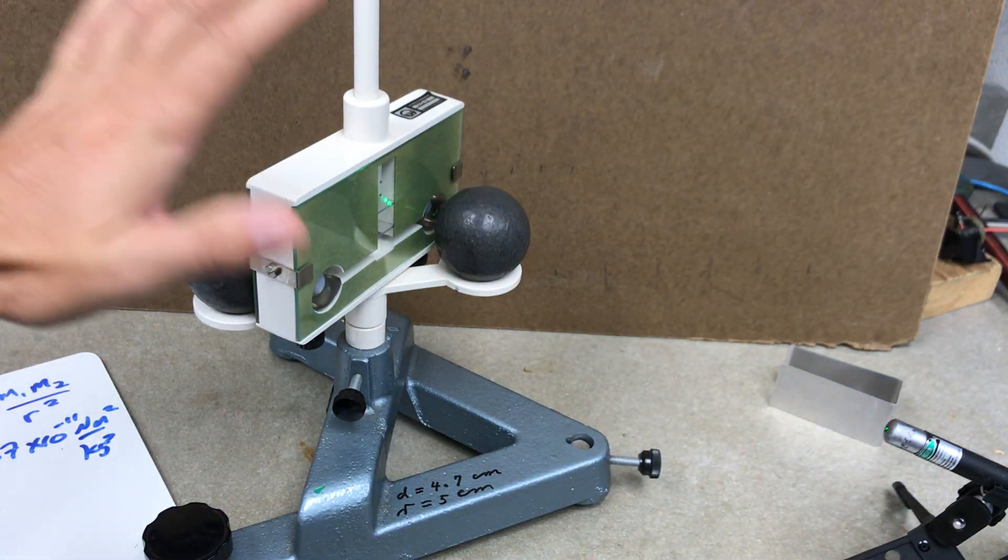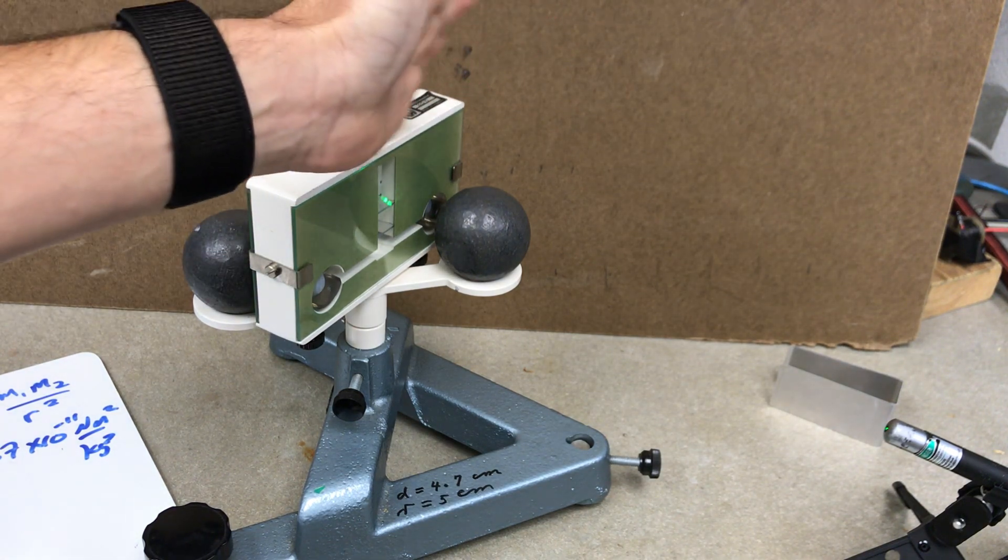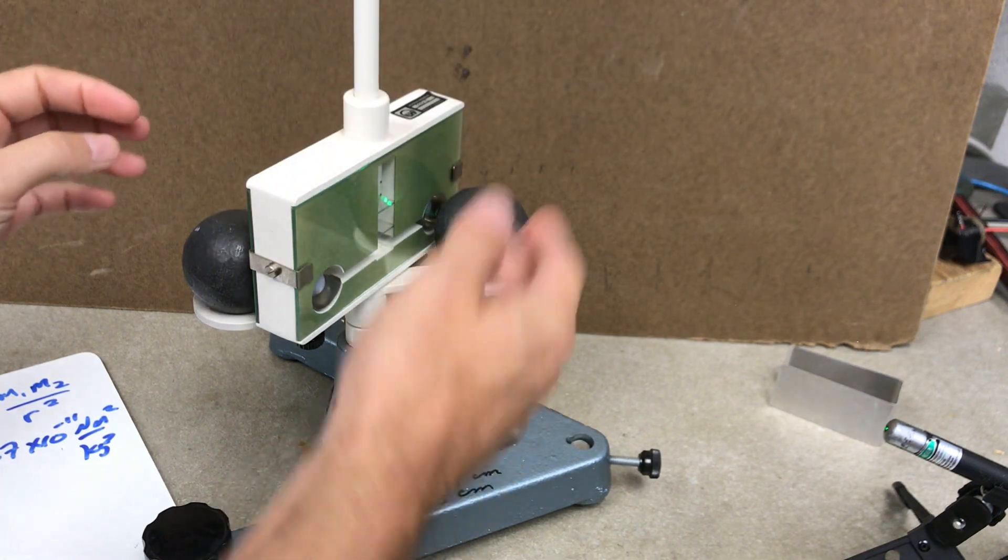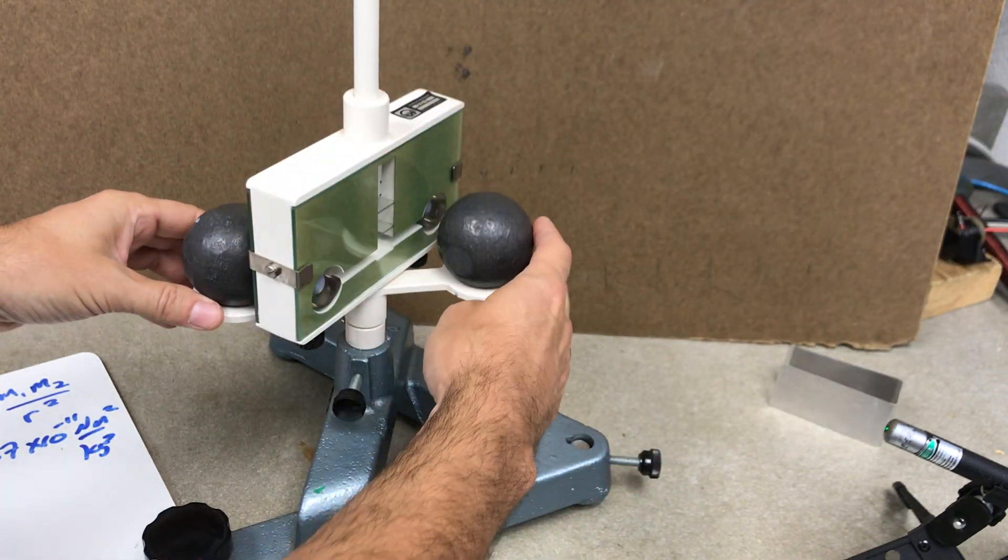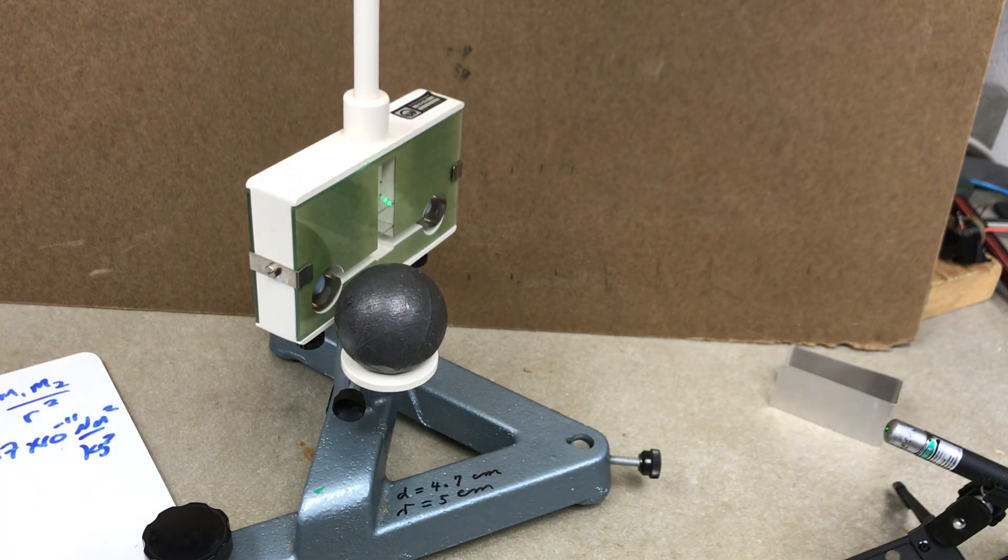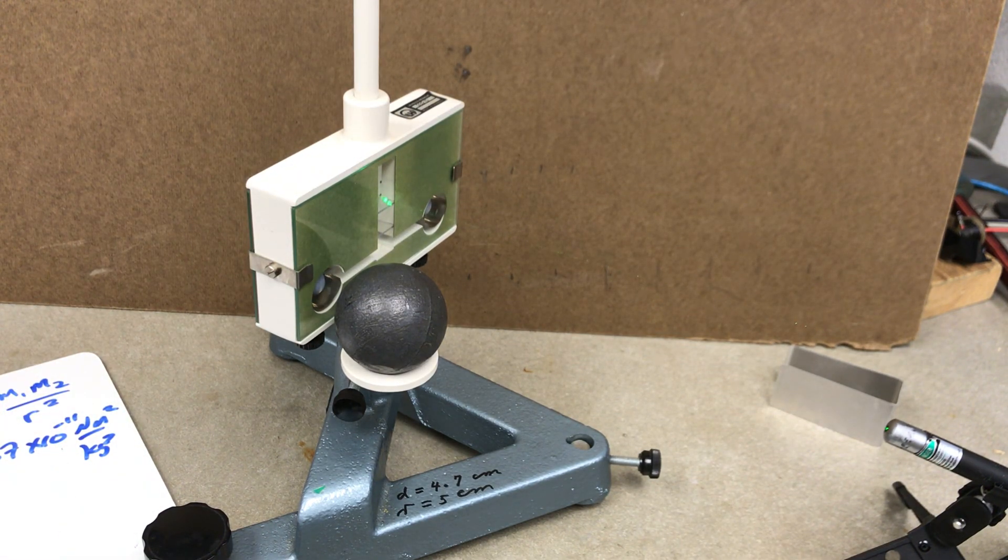Now it takes a while for the bar to settle in. It oscillates a little bit, and then it takes a while to settle in. And then once I do that, I can mark the position. I can rotate the balls the other way and then watch that dot move. But again, it takes a long time to do that.